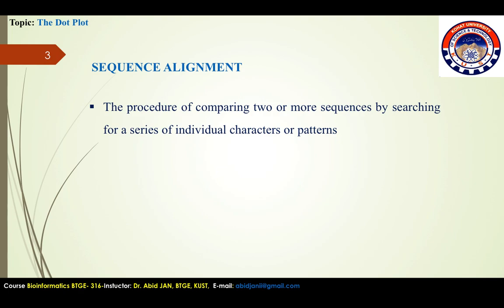There are two types of alignment: local and global. In global alignment, an attempt is made to align the entire sequences. If two sequences have approximately the same length and are quite similar, they are suitable for global alignment. Local alignment concentrates on finding stretches of sequences with a high level of matches.